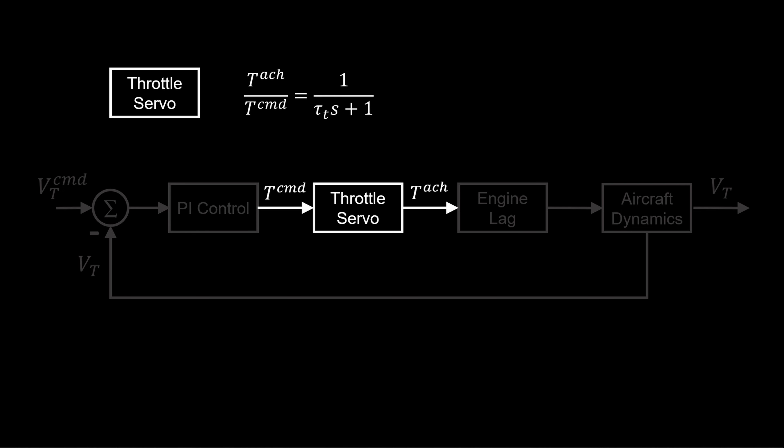We model the throttle servo with a first order transfer function. A time constant tau t defines the response. It receives a throttle command input from the controller and outputs the achieved throttle position.